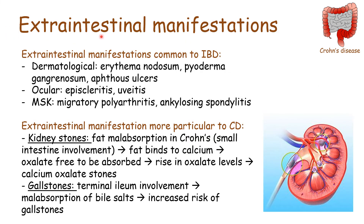For the extra-intestinal manifestations of Crohn's disease, first are those common to inflammatory bowel disease — both Crohn's and ulcerative colitis. These include erythema nodosum, pyoderma gangrenosum, and aphthous ulcers on the dermatological side. Ocular consequences include episcleritis and uveitis. Musculoskeletal manifestations include migratory polyarthritis and ankylosing spondylitis.